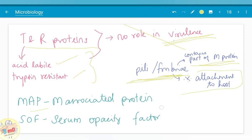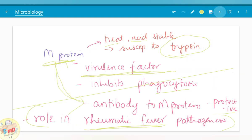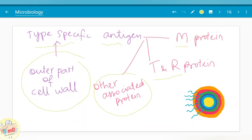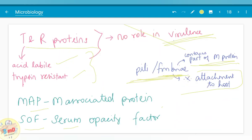MAP, M associated protein, SOF, serum opacity factor are the other associated proteins present in the outer part of the cell wall.